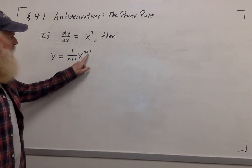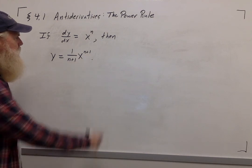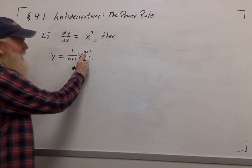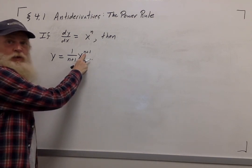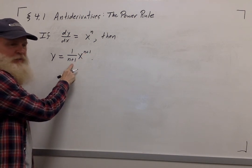Notice that this corresponds to the rule that we used at the end of the last video. We take the power of the exponent on x and we add 1 to it, and then we divide by the new exponent.